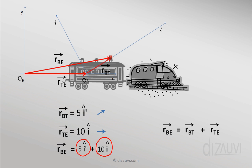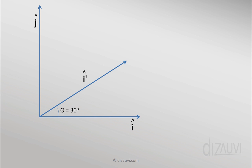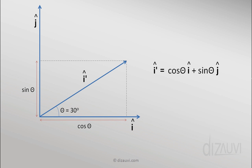The position vector of the box as measured from the Earth is r_BE = 5i' cap + 10i cap. Now i' and i are not equal, because although both have magnitude 1, their directions differ — i' is at 30 degrees from i. So we resolve i' along i and j: the projection along i cap is cos(theta) and along j cap is sin(theta). Hence i' cap = cos(theta) i cap + sin(theta) j cap. With theta = 30°, cos(theta) = √3/2 and sin(theta) = 1/2, so i' cap = (√3/2) i cap + (1/2) j cap.